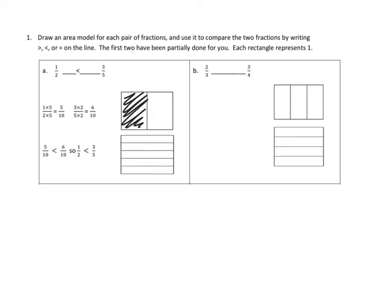Now let's look at our other fraction. Our other fraction is 3 fifths, and this time we're going to divide horizontally into fifths, and then we're going to need to shade in 3 of our fifths. And that's why we did these in different directions — that's why we did vertically here and horizontally here.